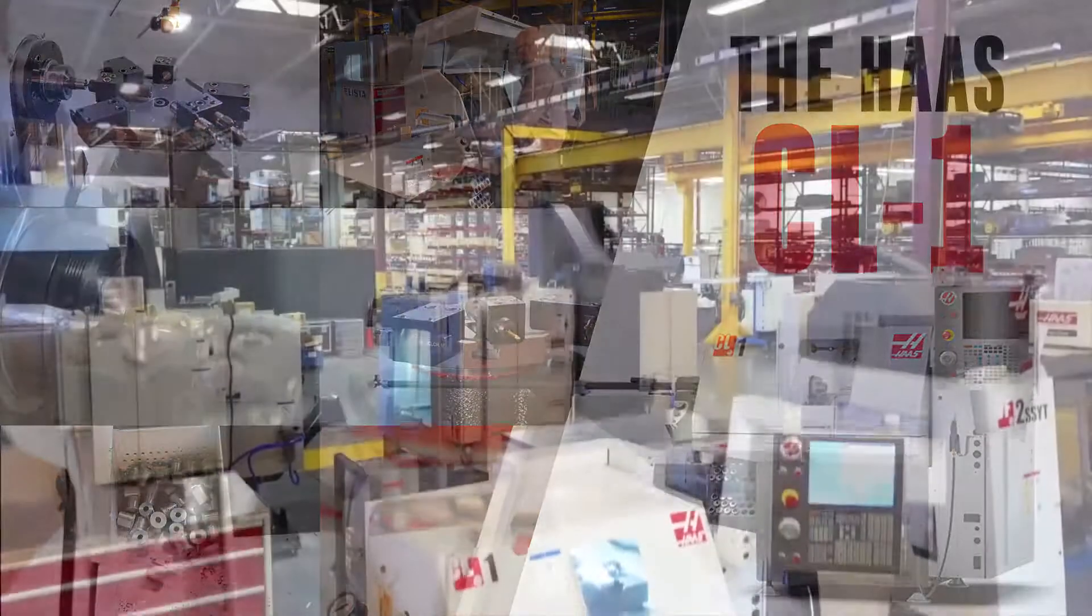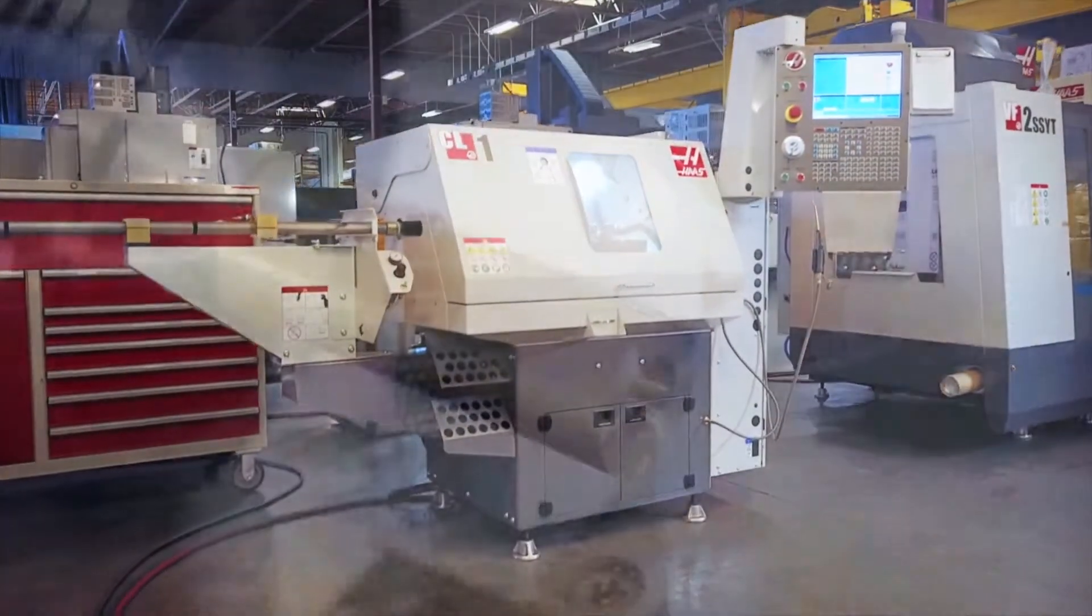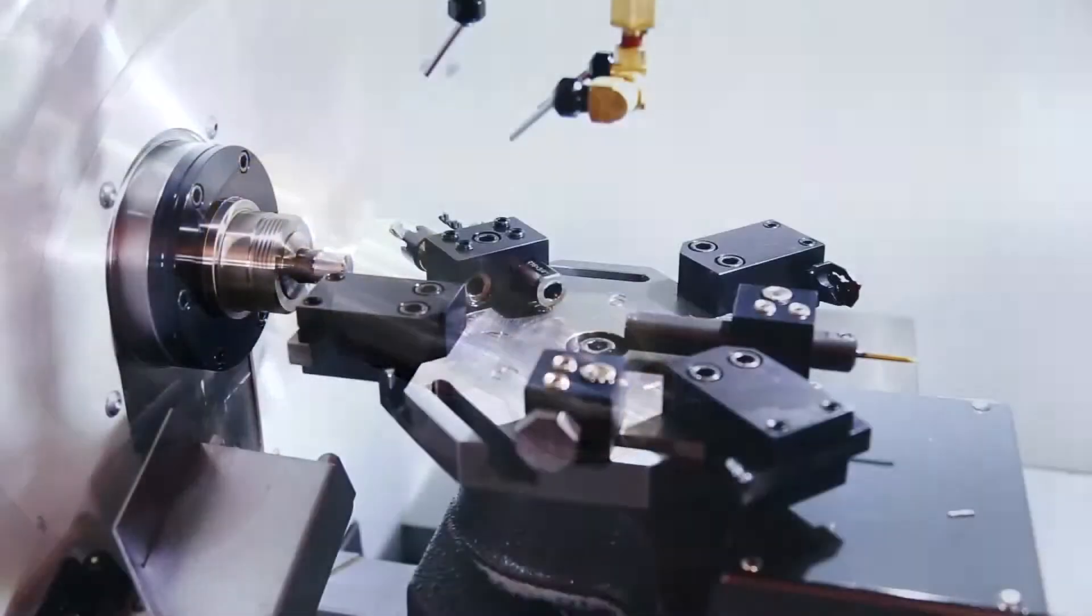This is our new CL-1 chucker lathe. Affordable and compact, the CL-1 is great for small part production, second op parts, and short run prototype parts.